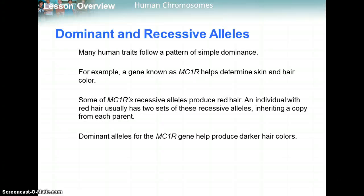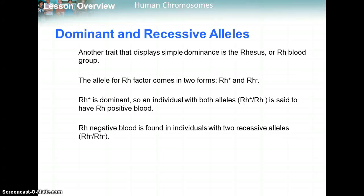One example of dominant and recessive alleles is skin and hair color. The MC1R gene — if you have recessive alleles, that produces red hair, so an individual who receives both recessive alleles would have red hair. Dominant alleles for the MC1R gene help produce darker hair colors. Another example of simple dominance is the RH factor. If you have a positive and negative genotype, you are RH positive. If you are homozygous recessive, you are RH negative.